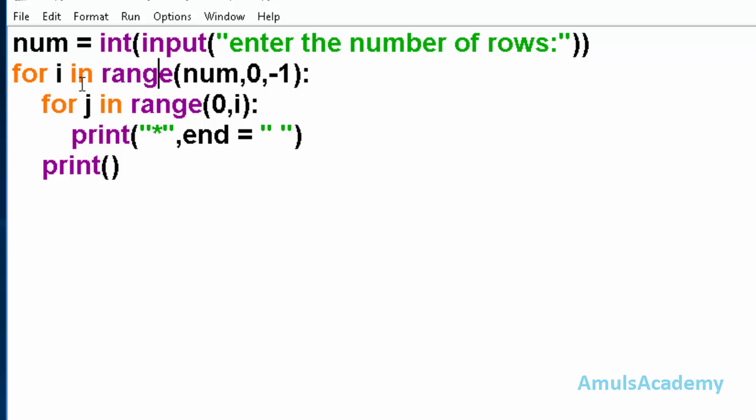Next we use two for loops. The first for loop is to print the rows and the second for loop is to print the columns.